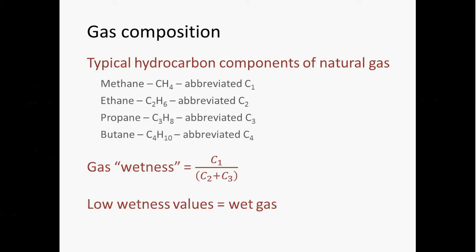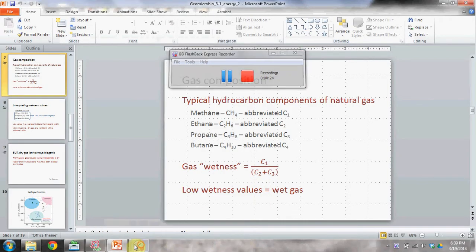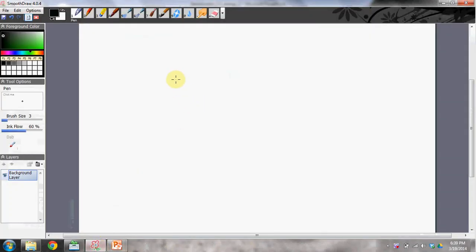So putting this all together, this means that low wetness values equate to wet gas because they have a higher abundance of these things. So that means that the denominator in this equation is larger and you end up with a smaller number overall. Let me illustrate this for you a little bit with some data. This data is some data that I collected from the Michigan basin, the Antrim shale. Shale is a major shale gas play there.